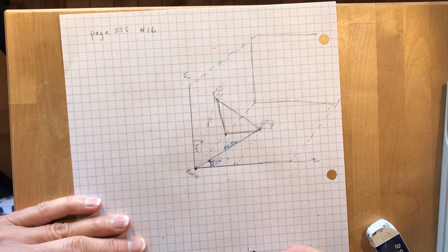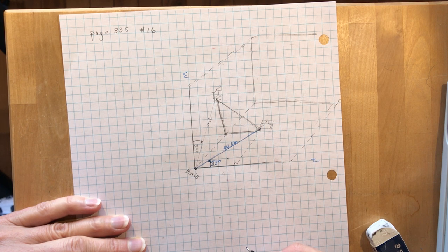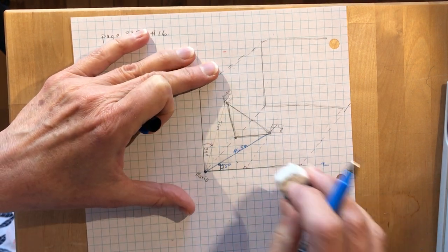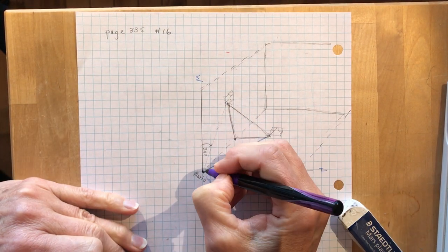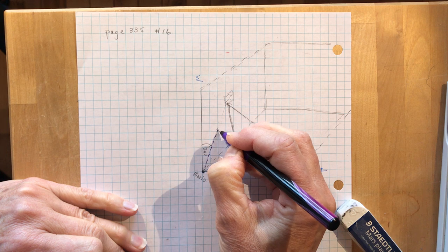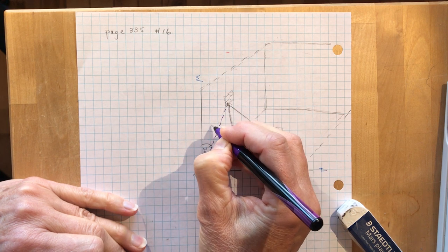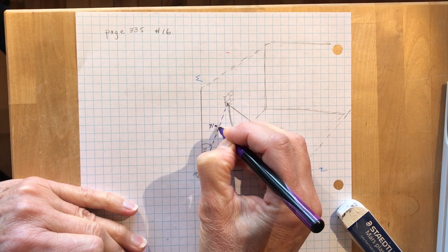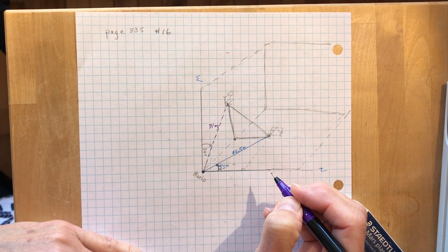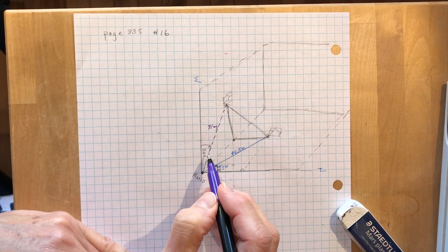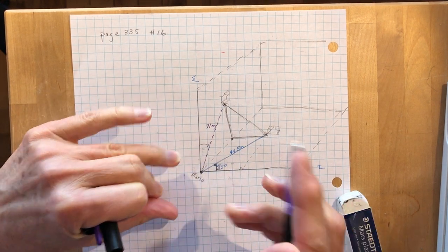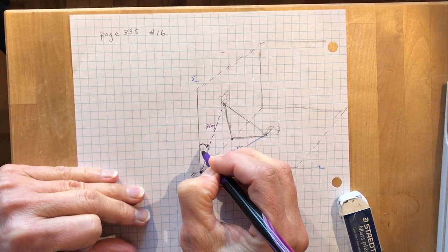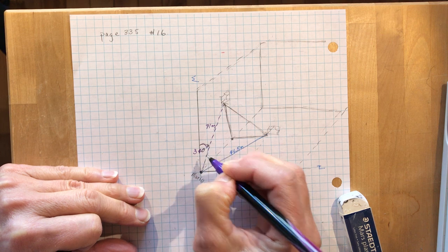Mario notices that his friend Thomas' window on the west side of the building appears to be 71 meters away. Let's do it in a different color. So from here to this window appears to be 71 meters. I don't know how he measures these things, but yeah, he's smart. And at an angle of elevation of 34 degrees. So that's in here, goes up 34 degrees.